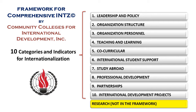The framework contains 10 categories of comprehensive internationalization. The categories are leadership and policy, organization and structure, organization and personnel, teaching and learning, co-curricular, international student support, study abroad, professional development, and partnerships.